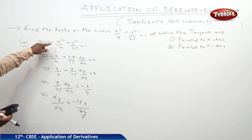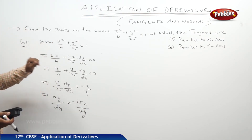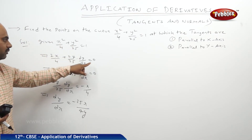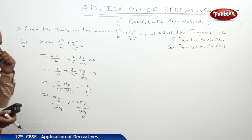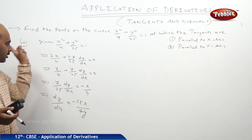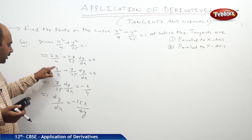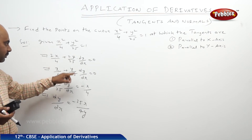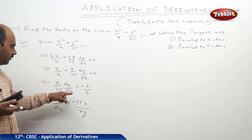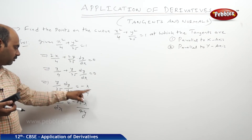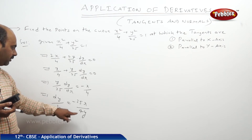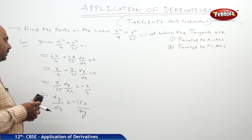Repeating the differentiation: differentiating x²/4 + y²/25 = 1 gives 2x/4 + (2y/25)(dy/dx) = 0. Simplifying by canceling the 2: x/4 + (y/25)(dy/dx) = 0. So (y/25)(dy/dx) = -x/4, which gives dy/dx = -25x / 4y.